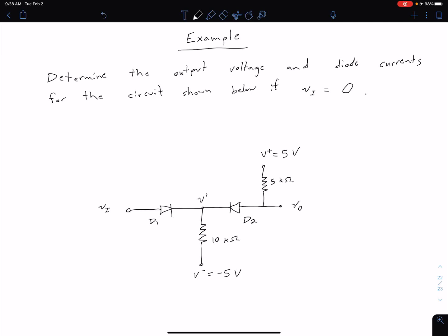We're now going to take a look at an example. So what we want to do is determine our output voltage and our diode currents for the circuit shown below when our input voltage is zero.